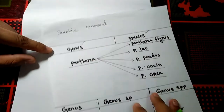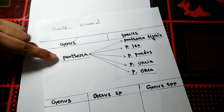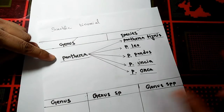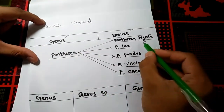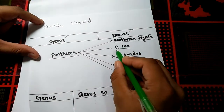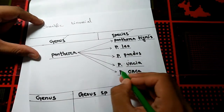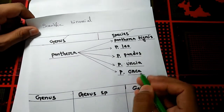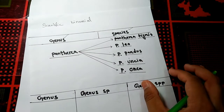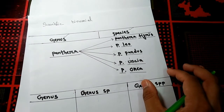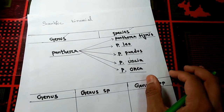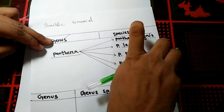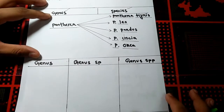For example, Panthera is the name of a genus, and this genus has several species like Panthera tigris, Panthera leo, Panthera pardus, Panthera uncia, and Panthera onca. So we have understood that any binomial name has two parts: genus and species.